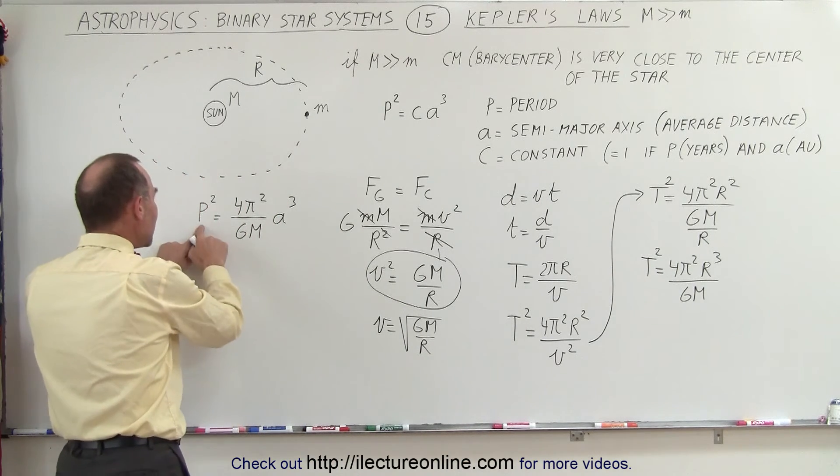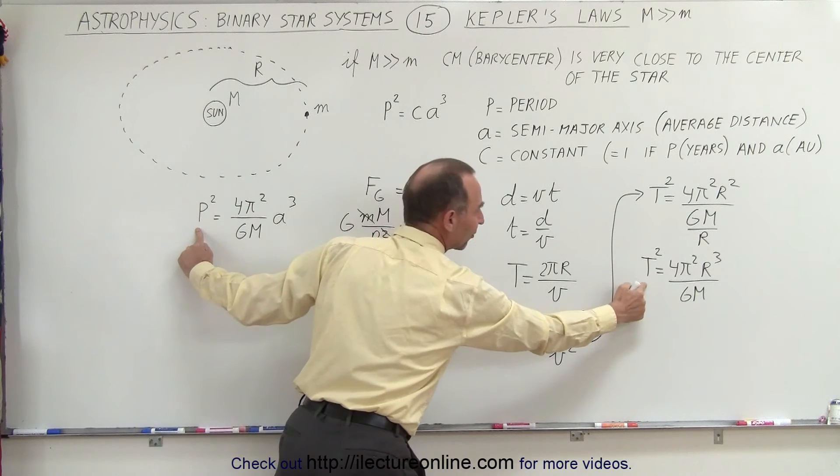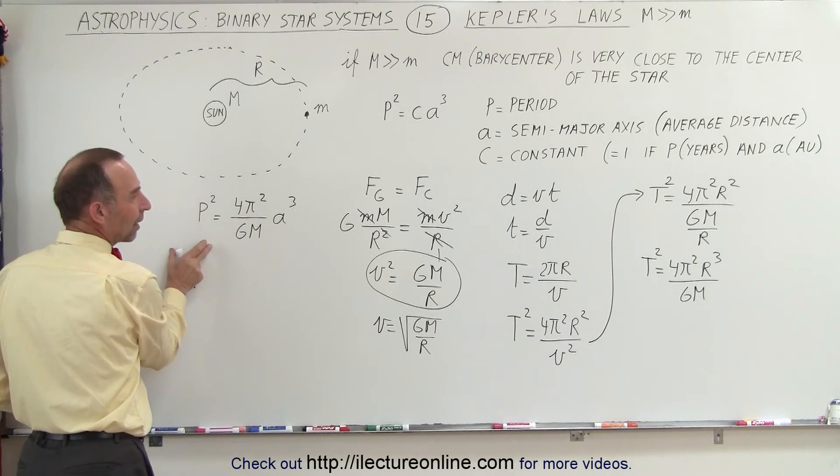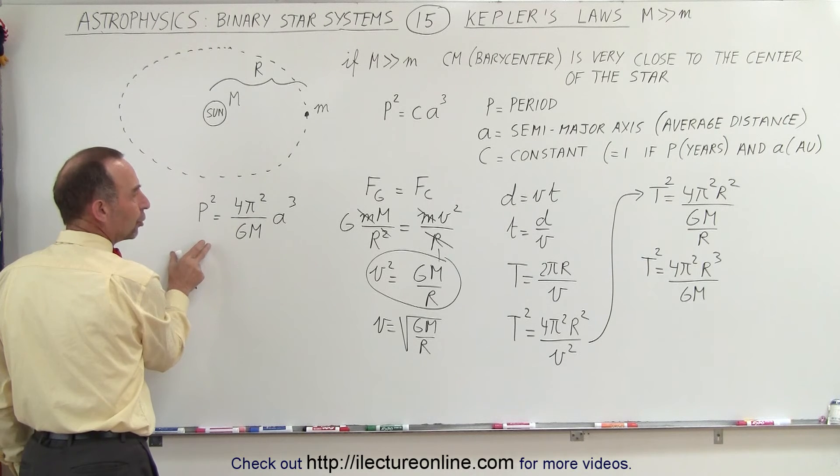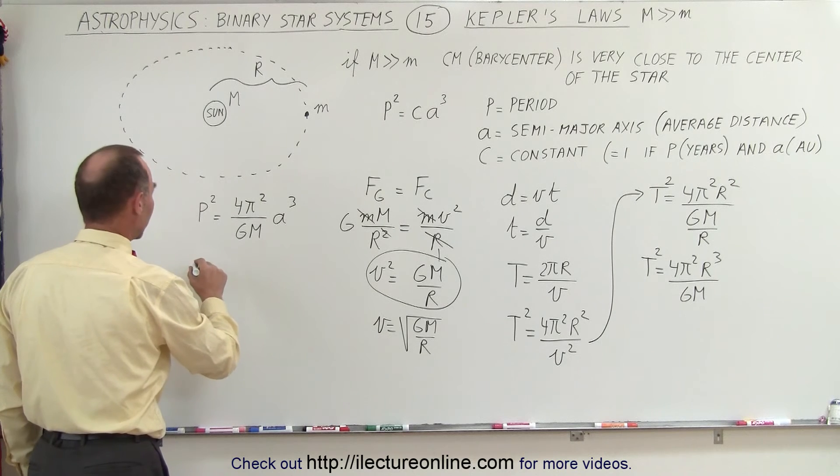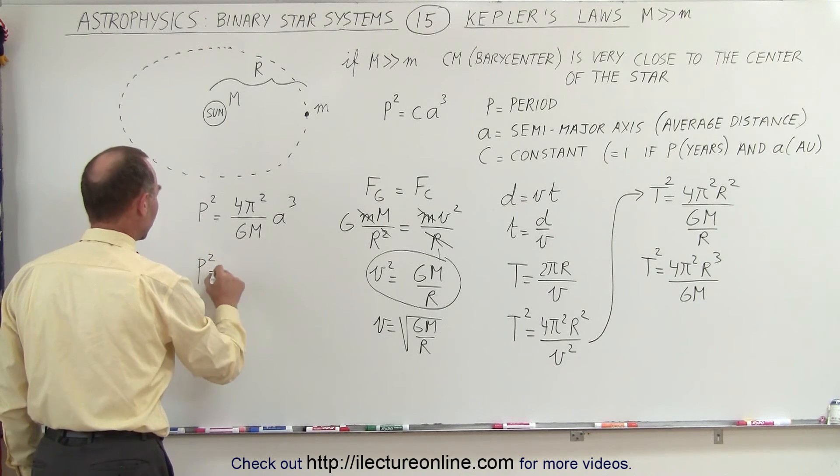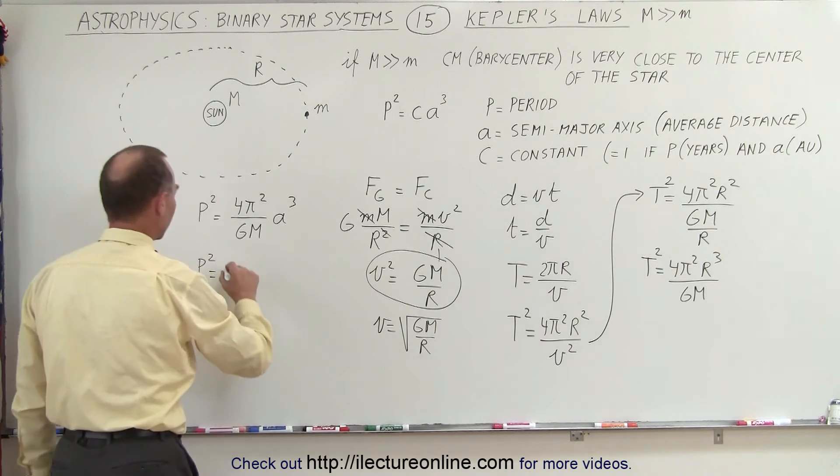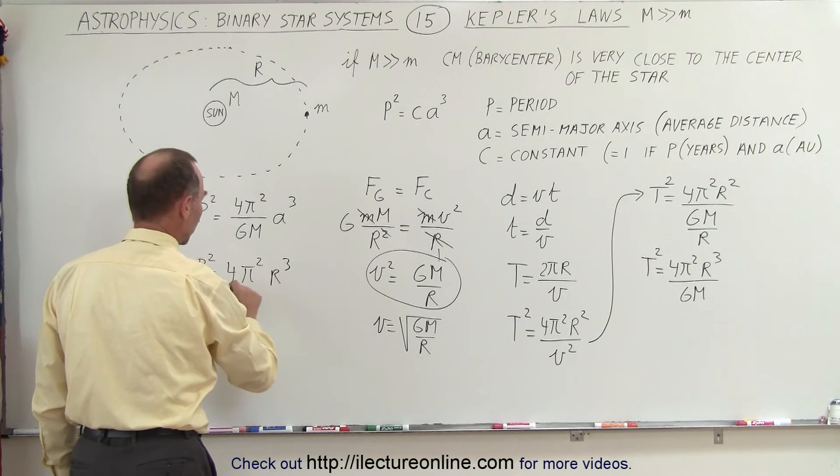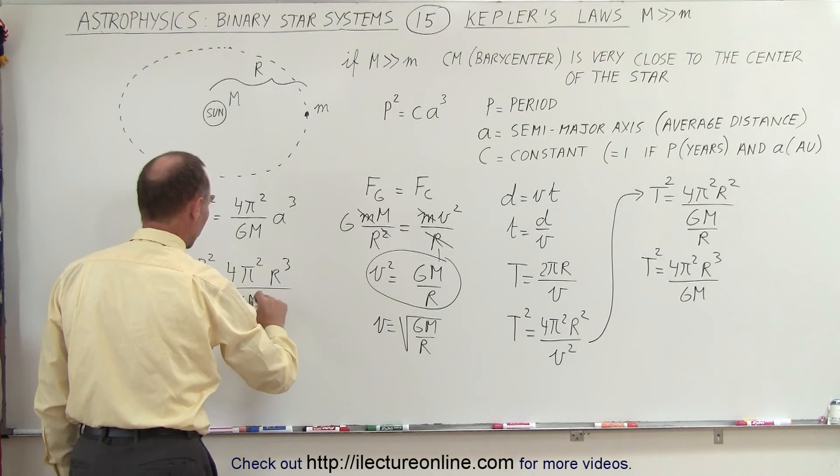And so now, this P is the same as this T here. That's the period of the orbit. In other words, we can replace this by 4π²r³/(GM). Or what I can do is I can write this as follows. I can say that P² is equal to 4π²r³ divided by GM.